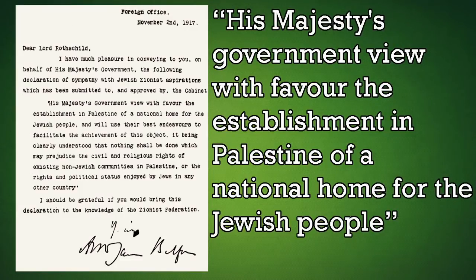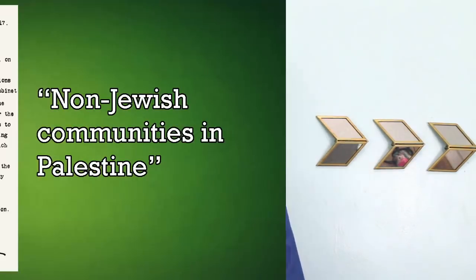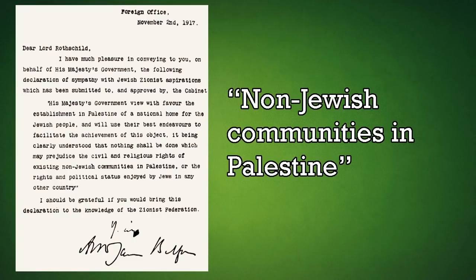In fact, it was a 67-word declaration in 1917 that really kicked this thing off, declaring His Majesty's government view with favor the establishment in Palestine of a national home for the Jewish people. Right from Jump Street, things are not looking great for the Palestinians, or as this declaration called them, non-Jewish communities in Palestine.